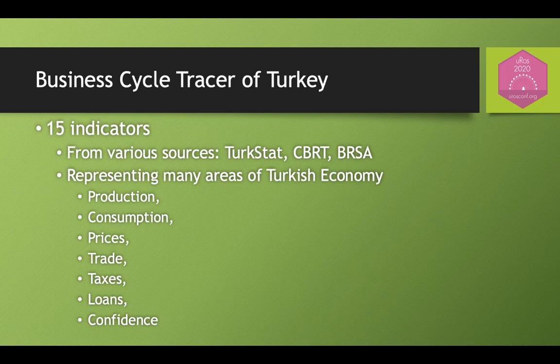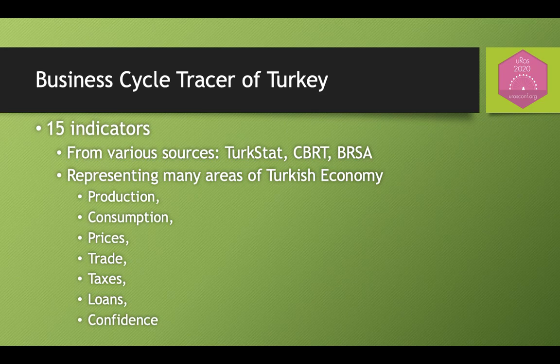When we started constructing the business cycle for Turkey, the first step was choosing the appropriate indicators representing various aspects of the economy. We depended on criteria such as their relationship with GDP, the consistency of this relationship in time, the nature and strength of the relationship, and its ability to catch the turning points of GDP. So we chose 14 indicators besides GDP, which are published by TurkStat and the Central Bank, and most of the indicators were published monthly, so we need to update the tracer every month.